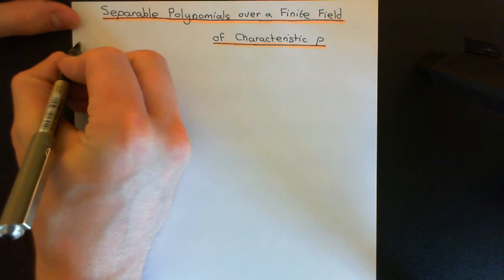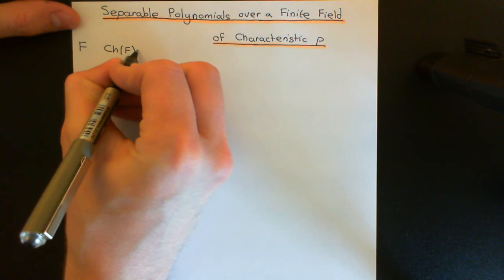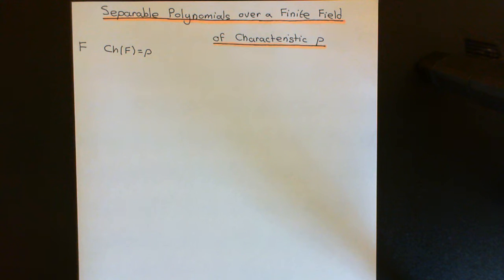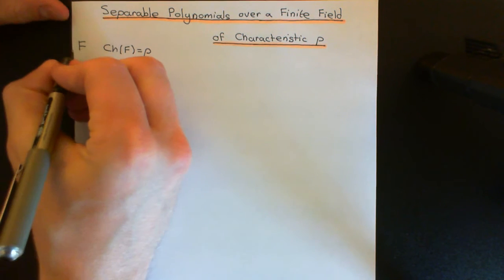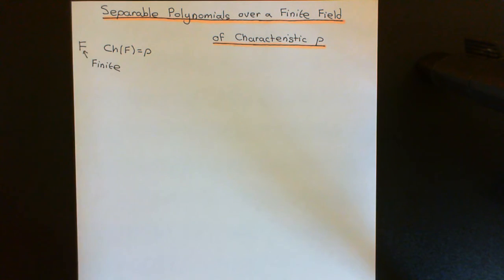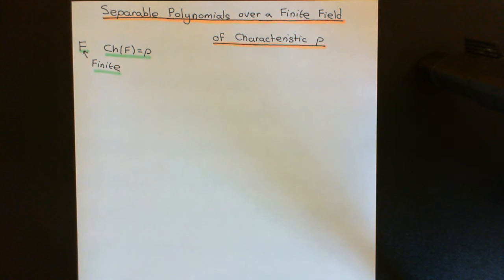So the set-up: we're going to have some finite field, capital F, and of course the characteristic of this finite field is going to have to be equal to a prime. Any finite field cannot be characteristic zero, because in a characteristic zero field you take the multiplicative identity and add it to itself however many times and you always get new answers — it never loops back around on itself. So you have to have an infinite number of elements in a field of characteristic zero. We know instantly that if we're working with some finite field, that implies that the characteristic is equal to a prime. So we're going to study which polynomials are going to be separable in the ring of polynomials over a finite field of characteristic equal to a prime.